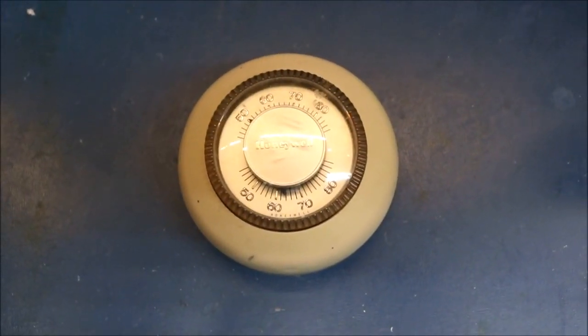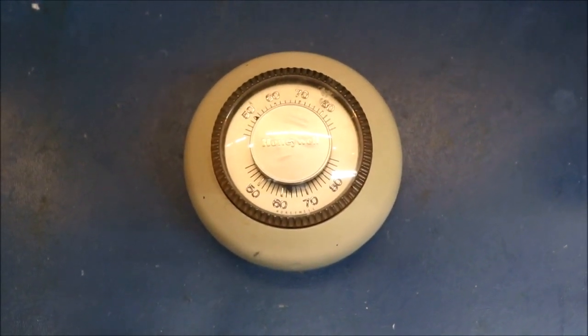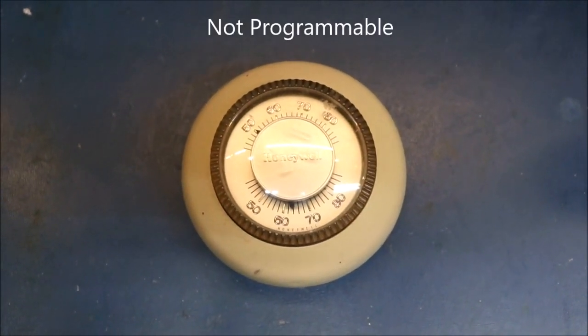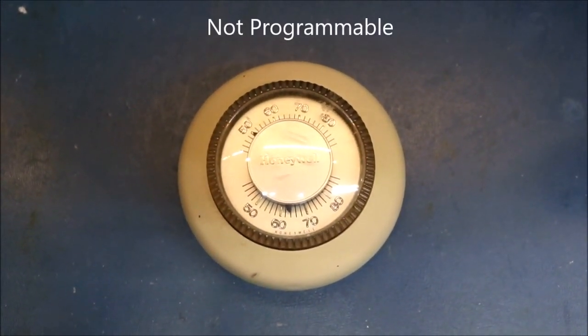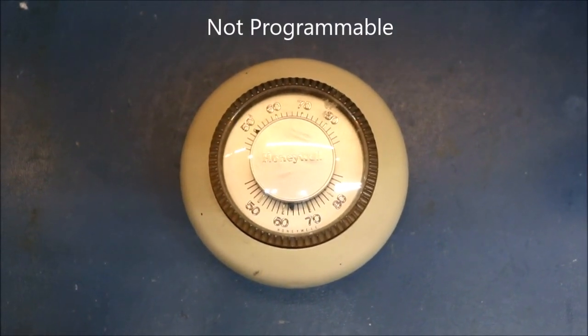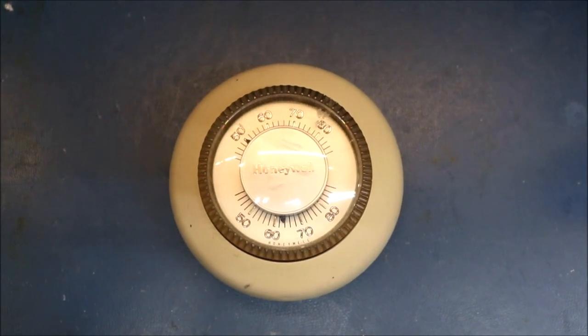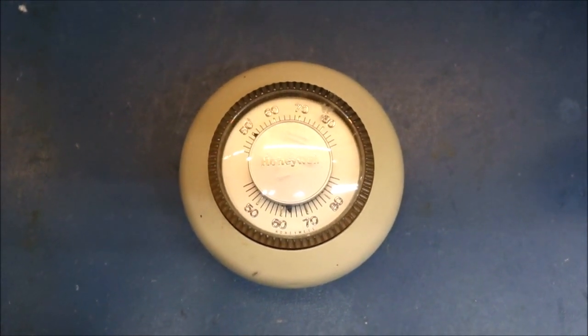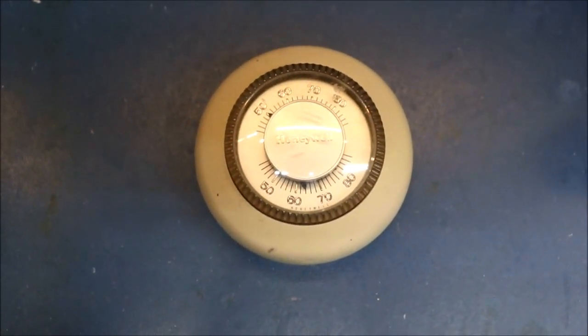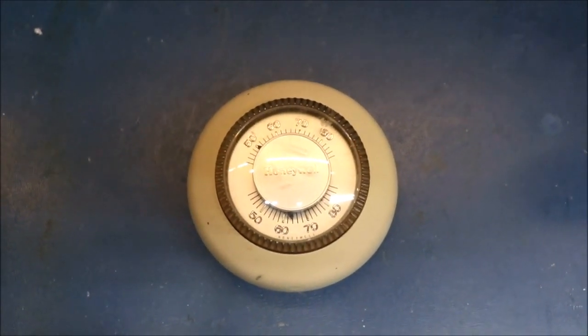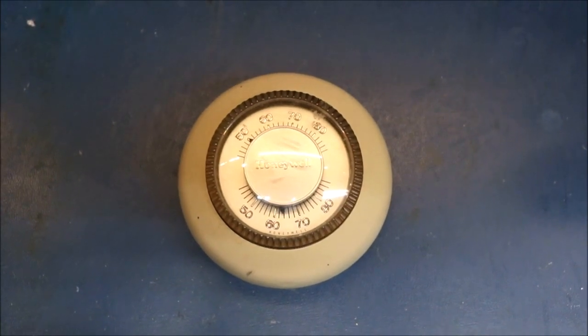The next thermostat we're going to talk about is this mechanical one. This is an older style, but basically works the same as the other ones. This does not require any batteries or power at all, and that's why it's called a mechanical one. But basically all of the thermostats work the same. When the temperature drops below a certain level that is set by the thermostat, then a contact closes to do something which we'll see later with regard to the heating system.